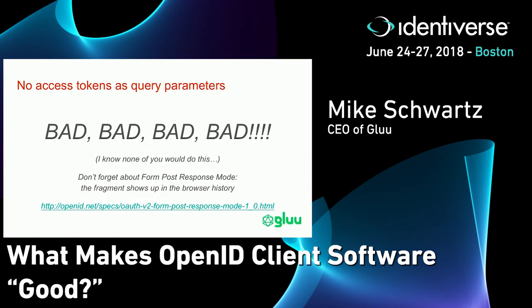One thing you should always look for: be very wary if you see stuff in the URL, because the URL gets logged in a lot of places. If it's being proxied with a web server, it might log it. The browser might log it too — there's browser history. So be very careful about putting anything in the URL. There's this thing called the form post response mode: the server sends the client information using a form that gets auto-submitted. It's a more secure way to send a message to the client in the body of the message rather than in the URL, and it prevents anything from leaking in the logs.